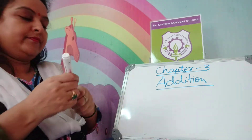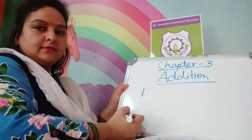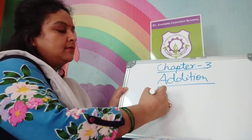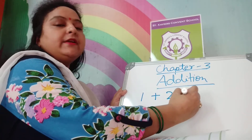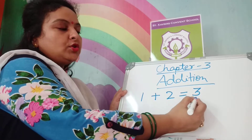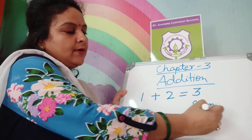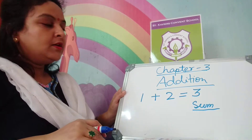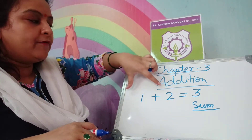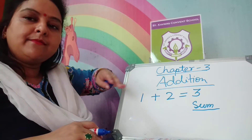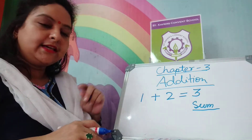If we take numeral one and the other numeral is two, then we will get the answer three. Three will be called sum — S-U-M, sum. So combining of two numbers or three numbers or more numbers is called addition.